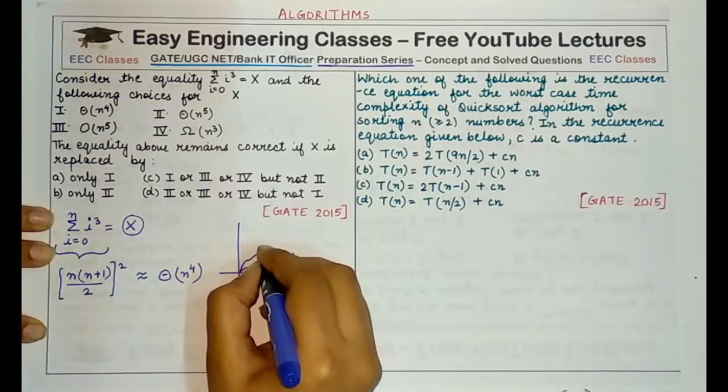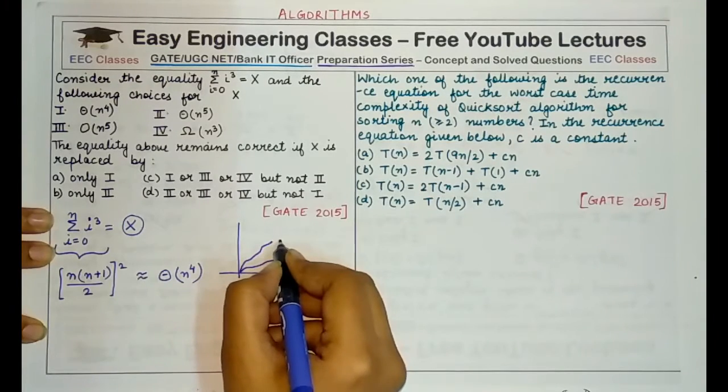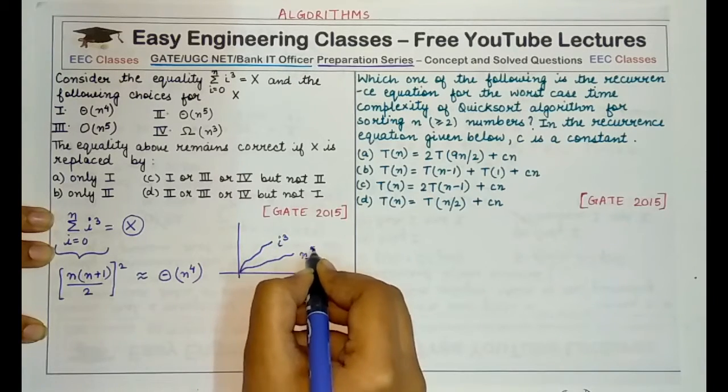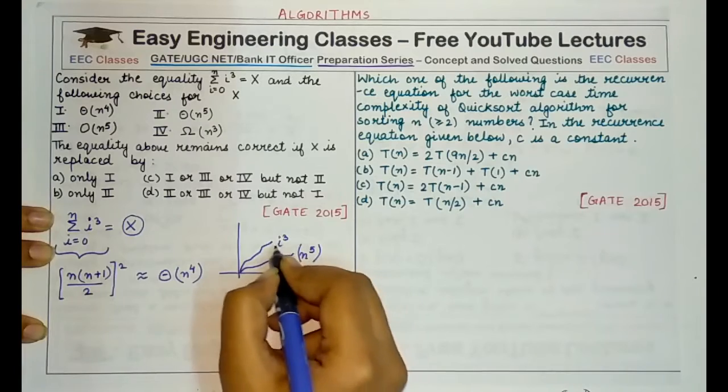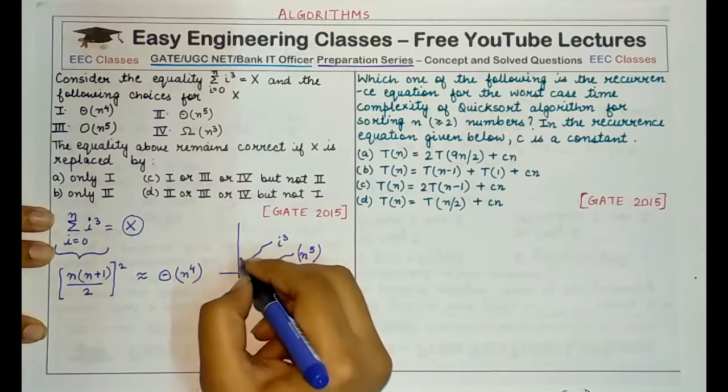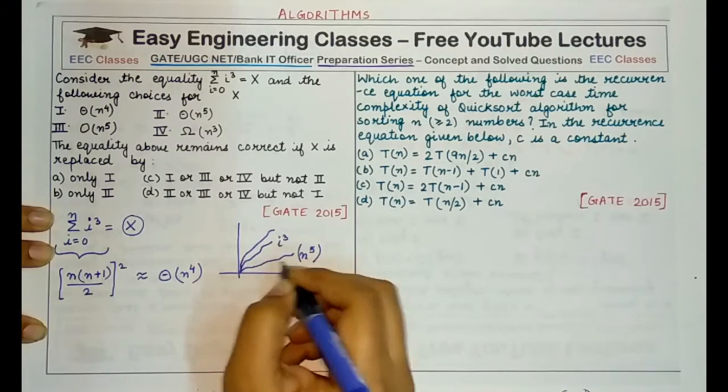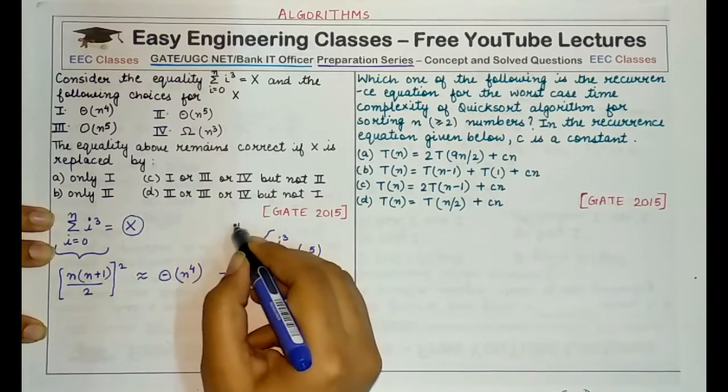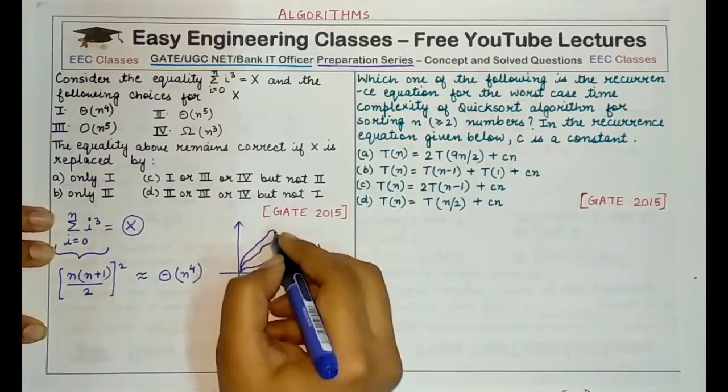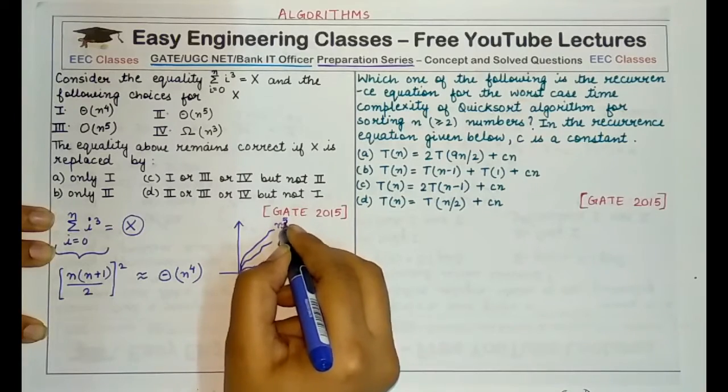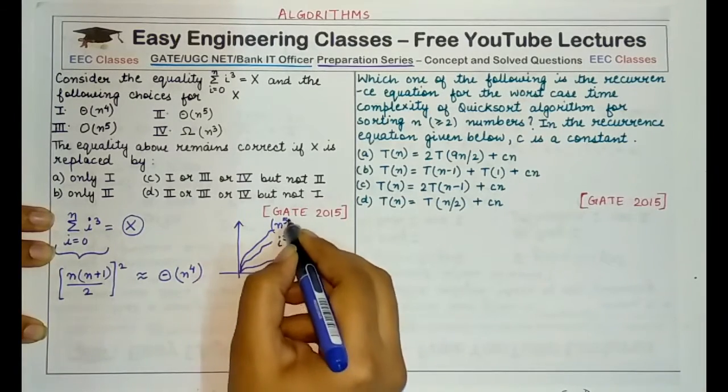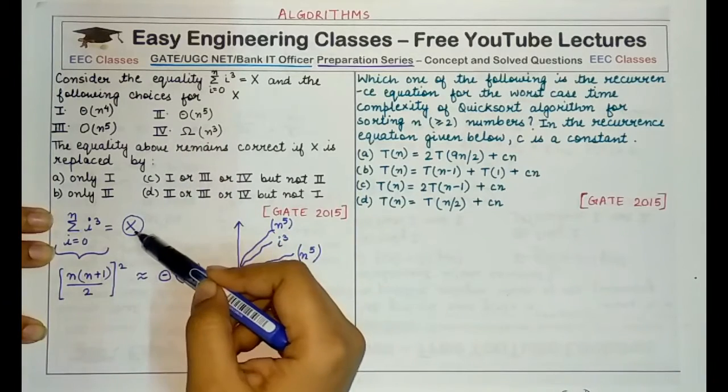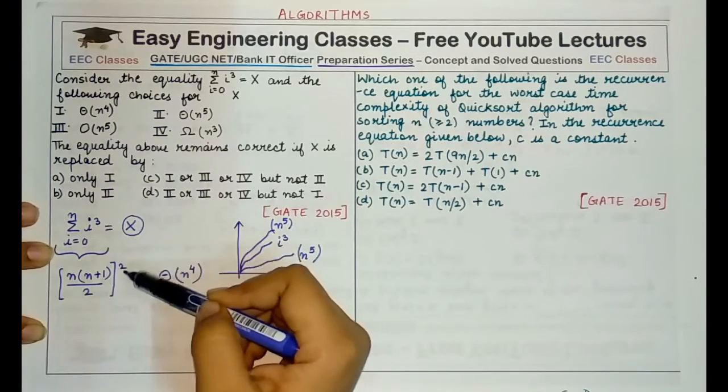See, if this is our expression of i cube, then n raised to power 5, theta of n raised to power 5 would be bounding this expression from below as well as from above. Something like this. This may not be a very clear cut or correct representation but I am representing it so that you get an idea that theta of n raised to power 5 is not the correct replacement for x.